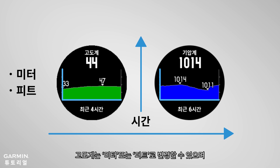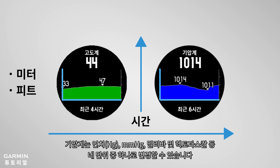The altimeter can be switched to meters or feet, and the barometer can switch between inch, mmHg, millibars, and hPa — four units in total.